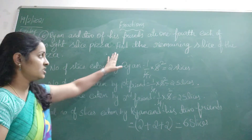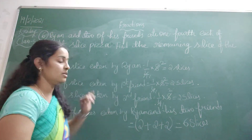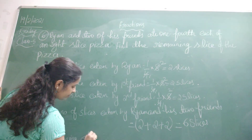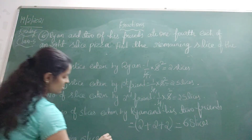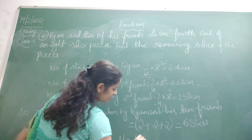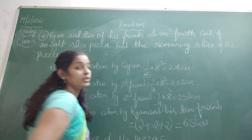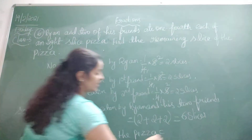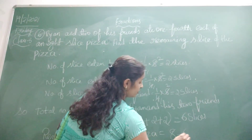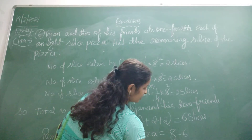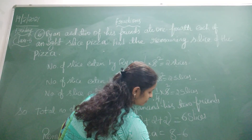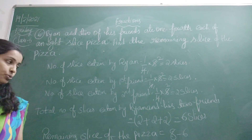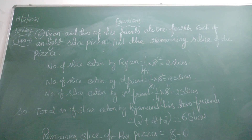So what the question is asking — find the remaining slices. The remaining slice of the pizza: the total number of pieces is eight, and they ate six, so eight minus six is two. The remaining slices are two. So in this way, we need to do the required problem.